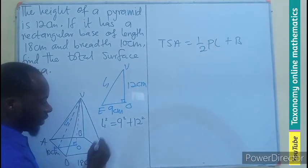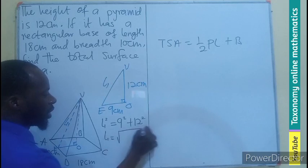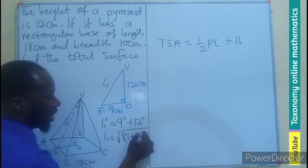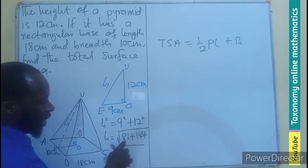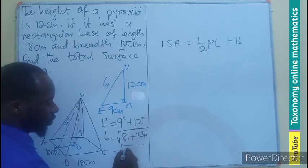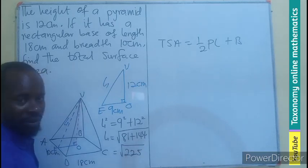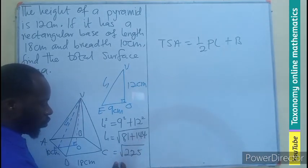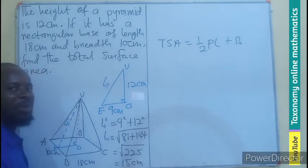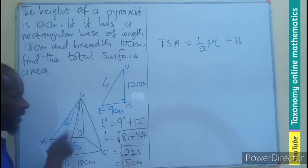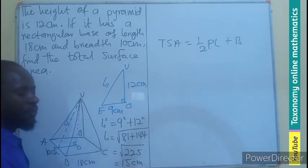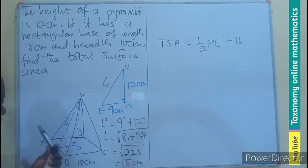So L1² = 9² + 12², which gives L1 = √(81 + 144) = √225 = 15 centimeters. So the slant height from V to E is 15 centimeters. The slant height toward the opposite face is also 15 centimeters, since both faces sit on the same 18-centimeter length. Now let's find the other slant height.